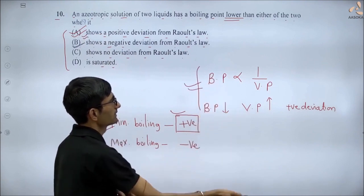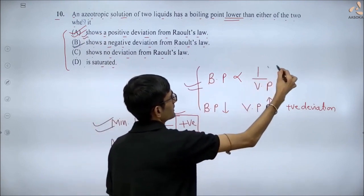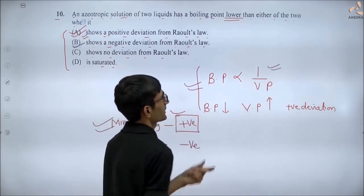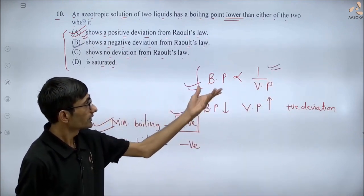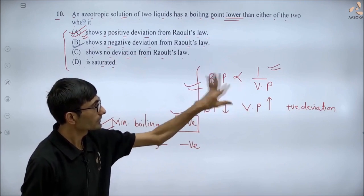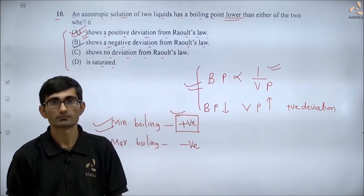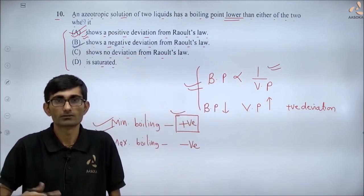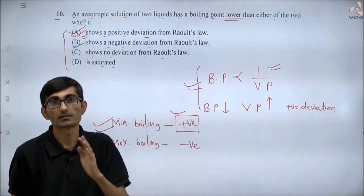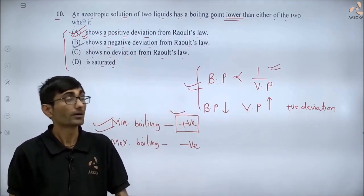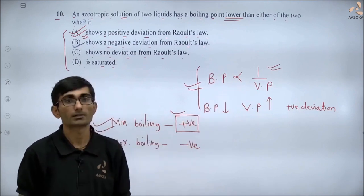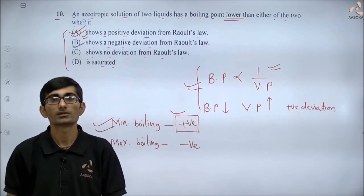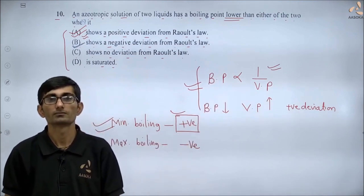यह ज्यादा आसान है — relation याद रखिए। सारे सवाल minimum/maximum boiling azeotropes के इस relation से हो जाएंगे: positive deviation या negative deviation। सारे सवाल आप उससे बना सकते हैं। ठीक है? चलिए, thank you.